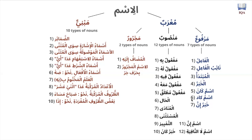So in the following lessons, we're going to speak about al-marfu' first, then al-mansoob, and then al-majroor. We're going to have one specific lesson for every single one of them — a specific lesson for the fa'il, the na'ib al-fa'il, the mubtada, the khabar. Some of them we might combine, but in a general sense there's going to be one video for every single one, going into details on how they function until we finish the matan, inshallah.